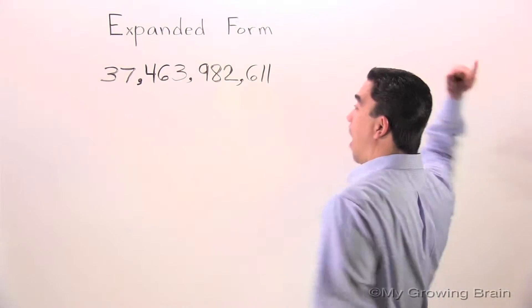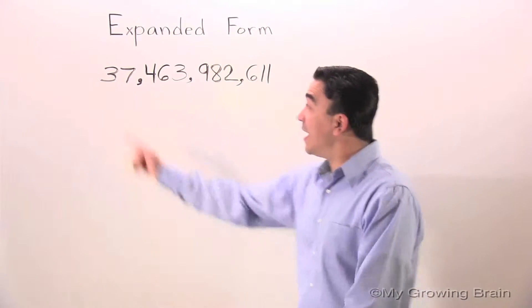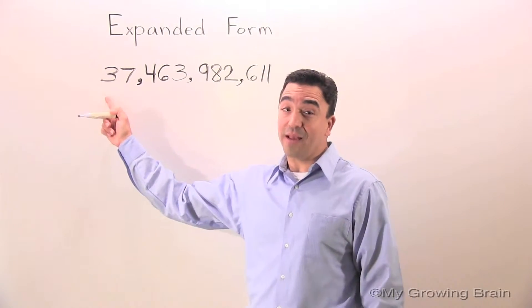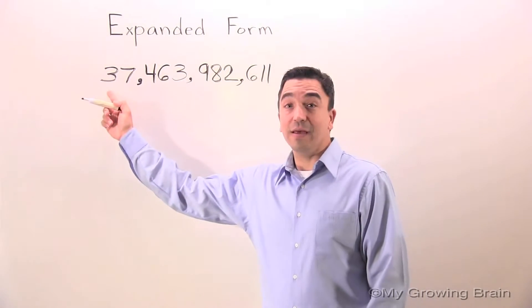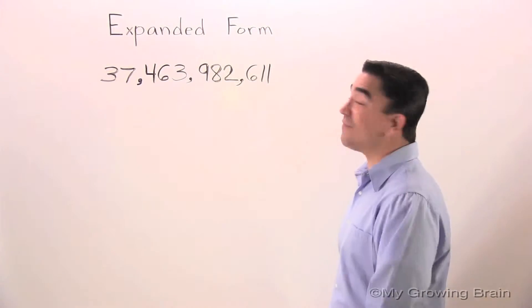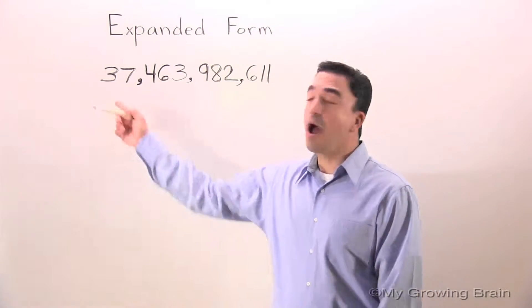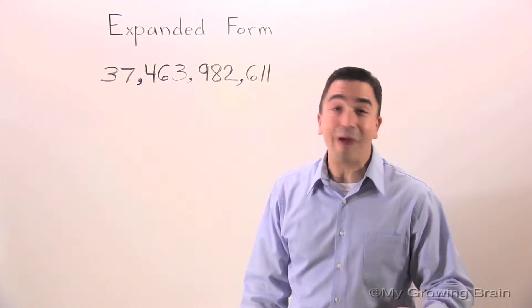We're going to start all the way at the far left. In the 10 billions place, the digit is 3. It has a value of 30 billion. Let's write it.